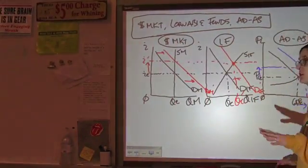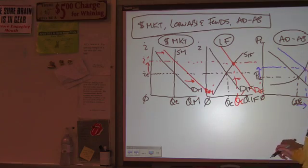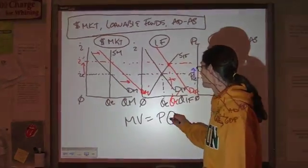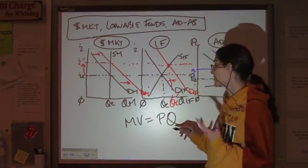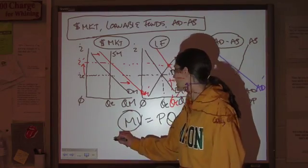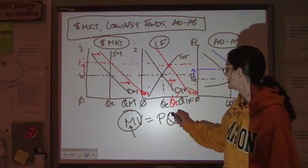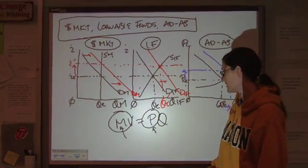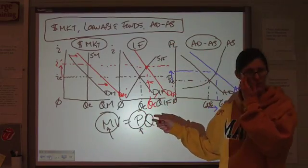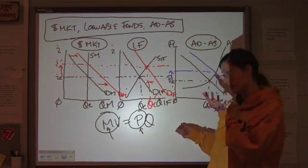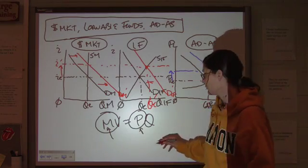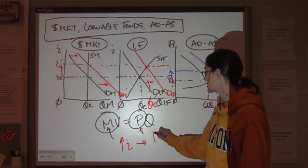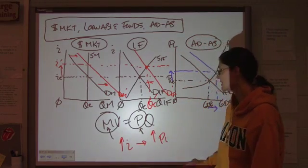Going back to our equation of exchange, we said MV equals PQ. And we said that a change in the supply of money causes a change in price. Now, doesn't that tie into what we just did? Pretty much.